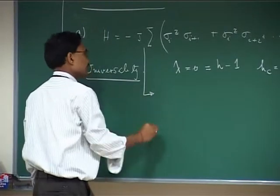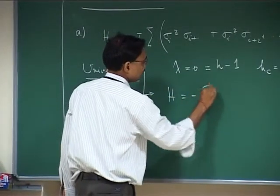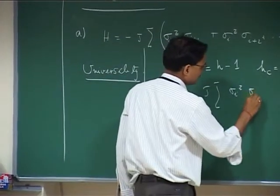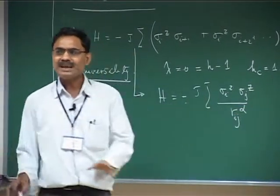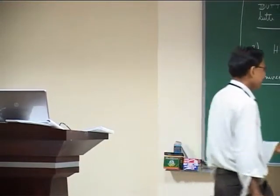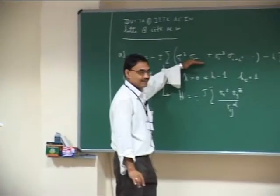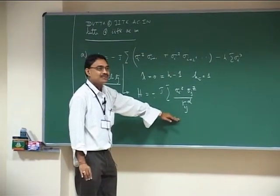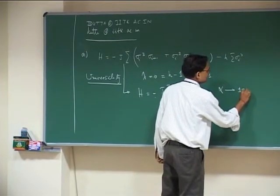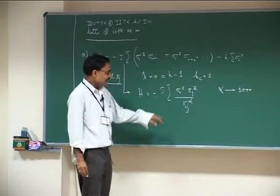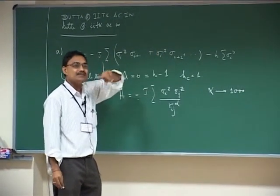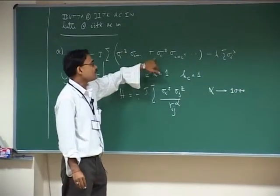But there is a catch. Someone may say, I will give a long-range interaction with a decay like 1/r^α. For classical systems, depending upon what α is, critical exponents change. If α is very large — say α is a thousand — then this is effectively a short-range interaction, and your critical behavior will be like that of a short-range Ising model.